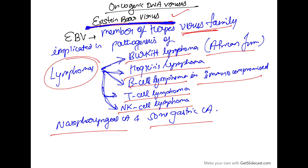Epstein-Barr virus is a member of the herpes virus family. It is implicated in the pathogenesis of multiple lymphomas like Burkitt's lymphoma (African form), Hodgkin's lymphoma, B cell lymphoma, immunocompromised T cell lymphoma, NK cell lymphoma, some nasopharyngeal carcinoma, and some gastric carcinoma.